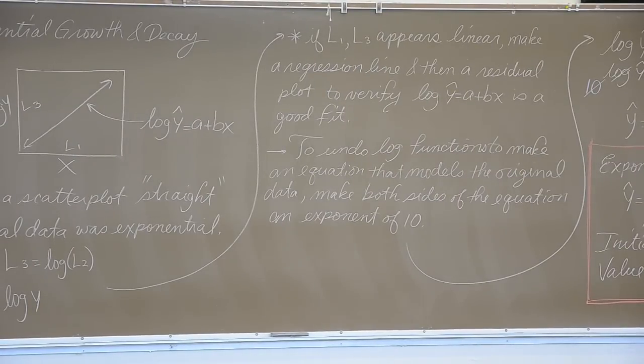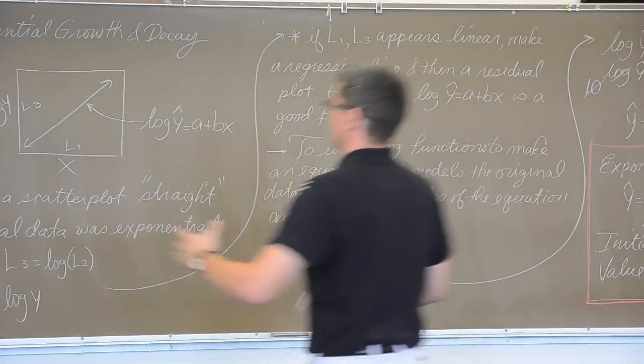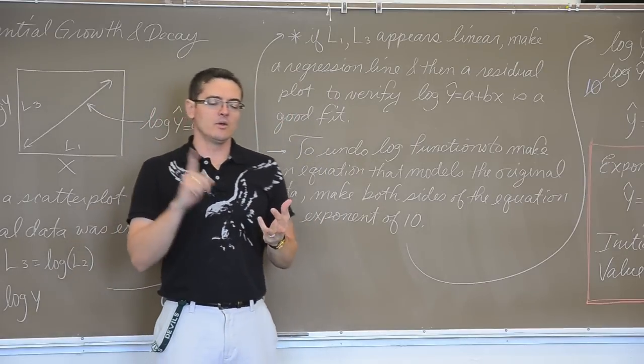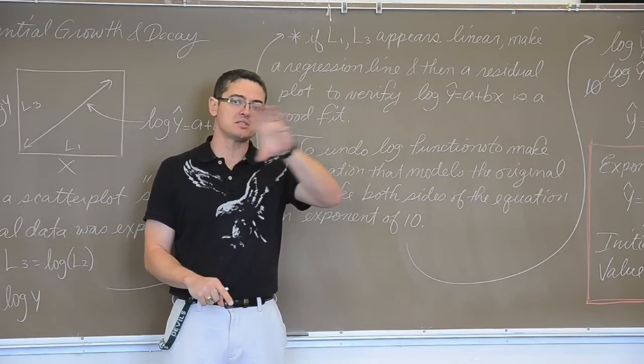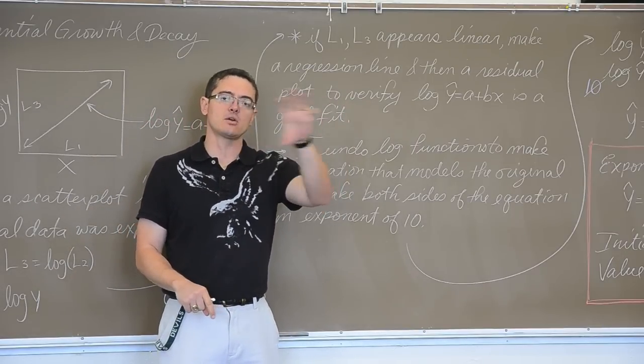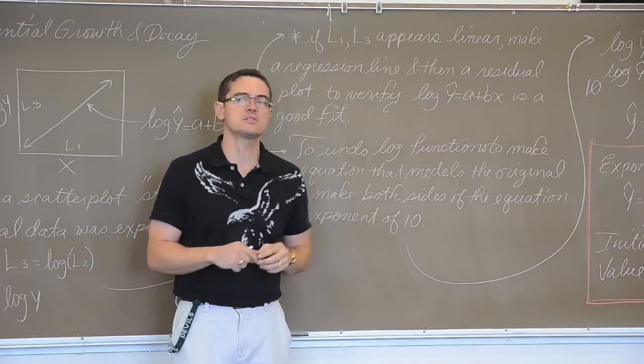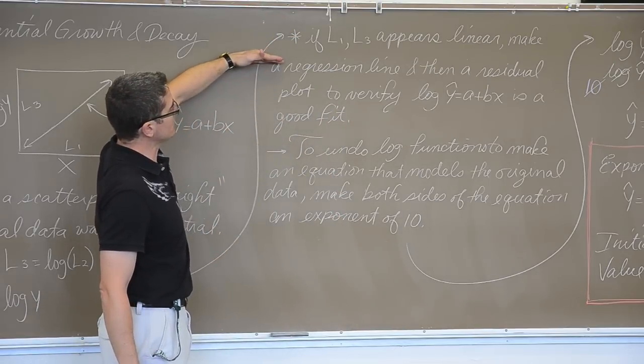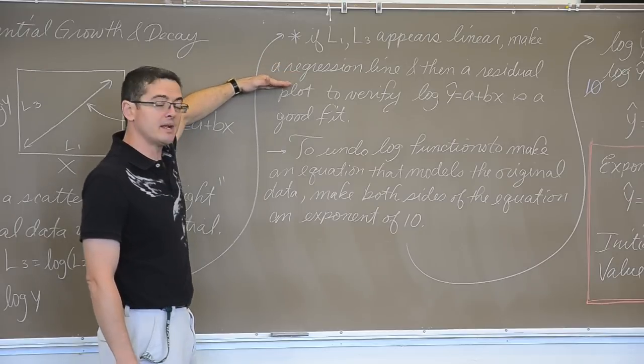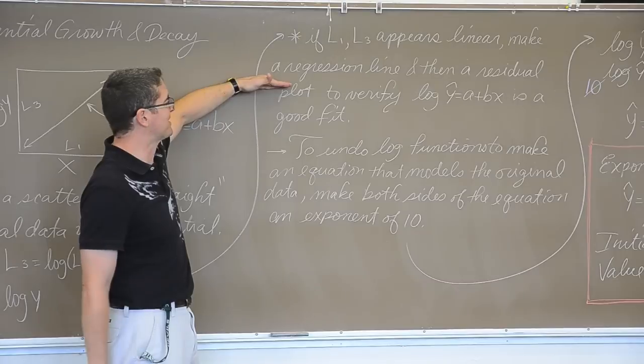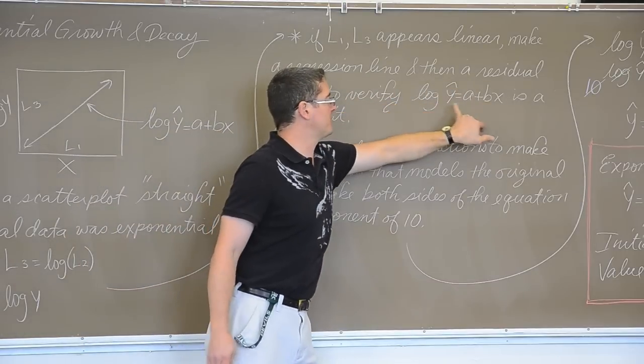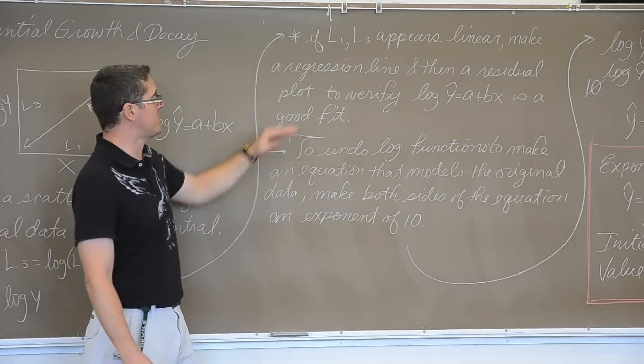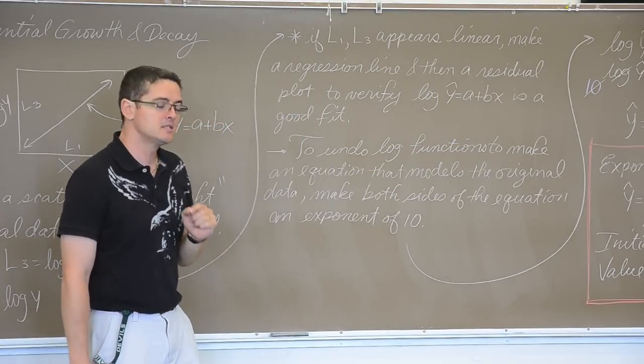So we made our scatter plot, it looked curved, we logged the y's, it looked straight, we ran the regression line, we made sure that it was straight using that residual plot and seeing the horizontal band of points showing no clear curved pattern in the residual plot. Then, if L1 and L3 appear linear, make a regression line, then a residual plot, I'm just writing down what I just told you a second ago to do, and prove, or show yourself, that the log of y hat equals a plus bx is a good fit for that transformed data.